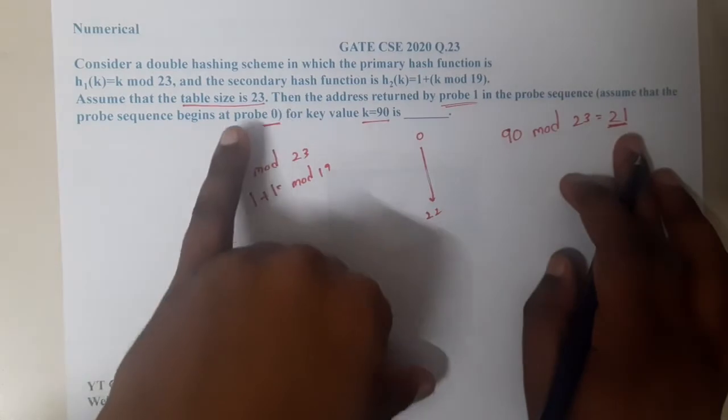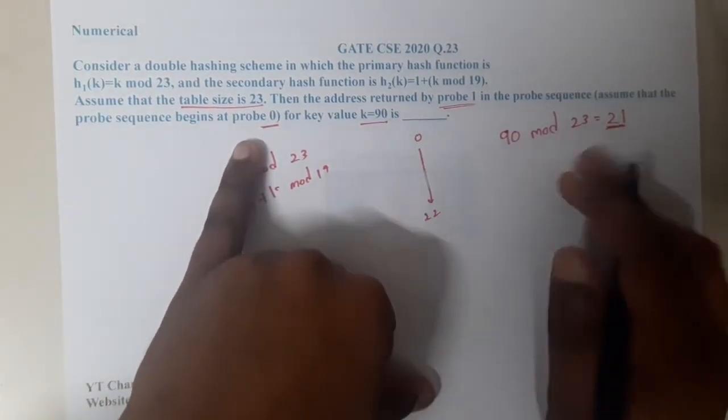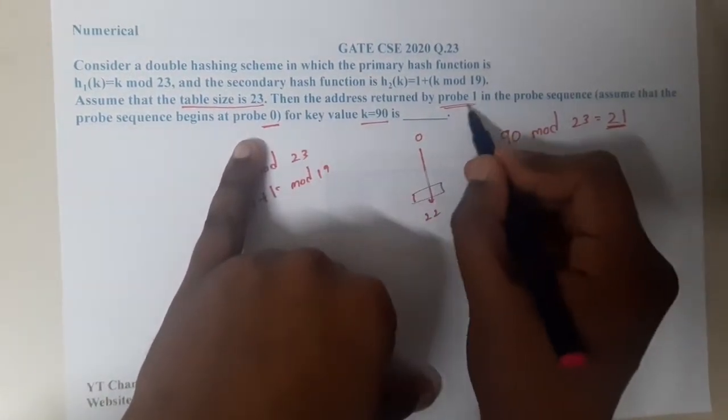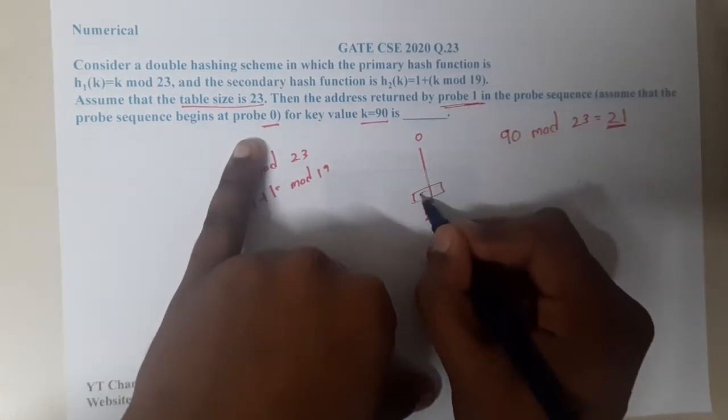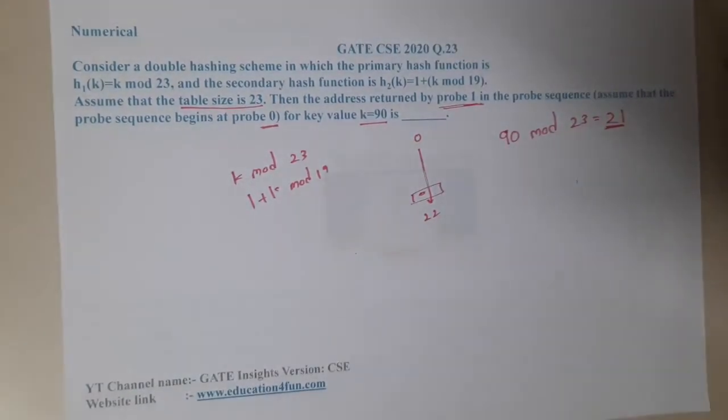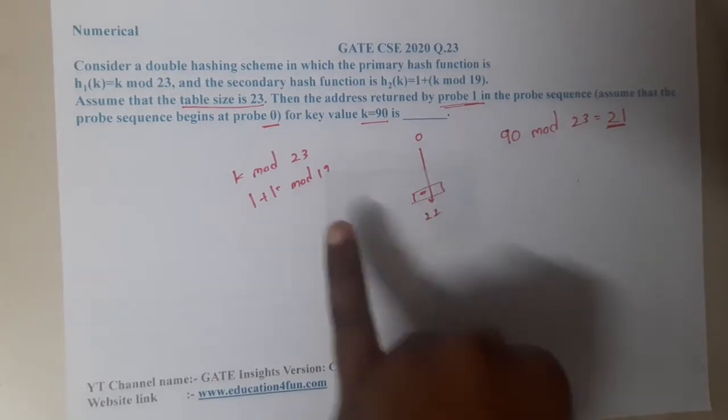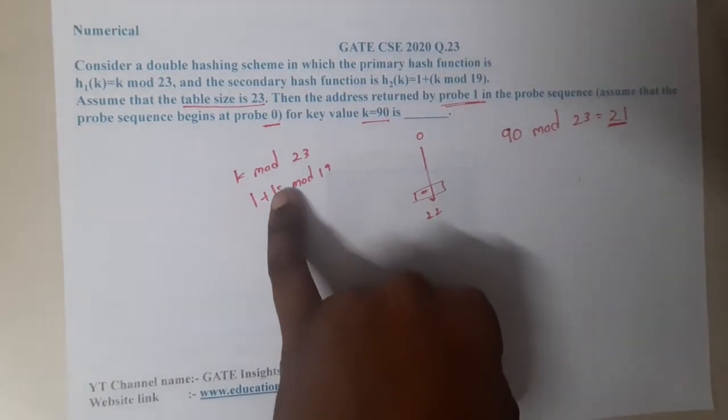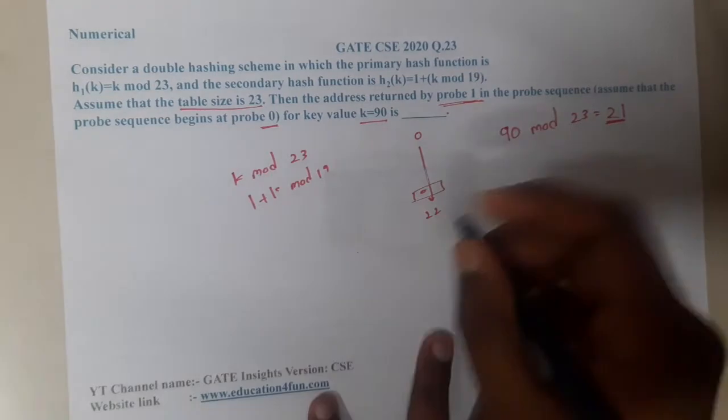For this, the value is 21. Usually the 90 item will go in 21, but according to the question we should go up to probe 1. Basically at this slot some other element is there. Whenever there is collision, you will start solving for the next equation.